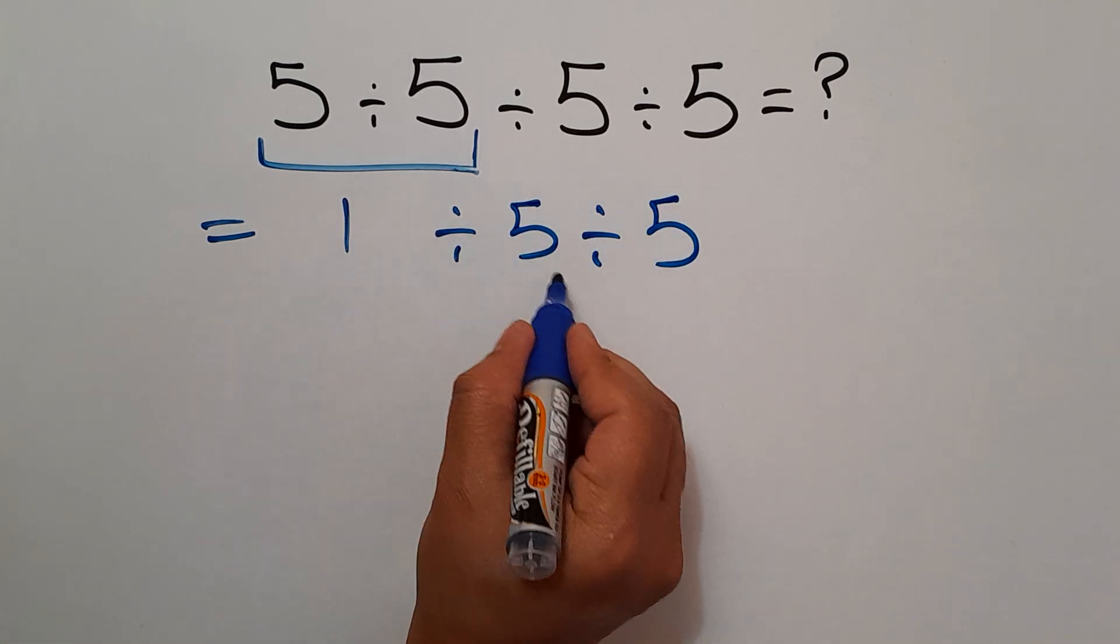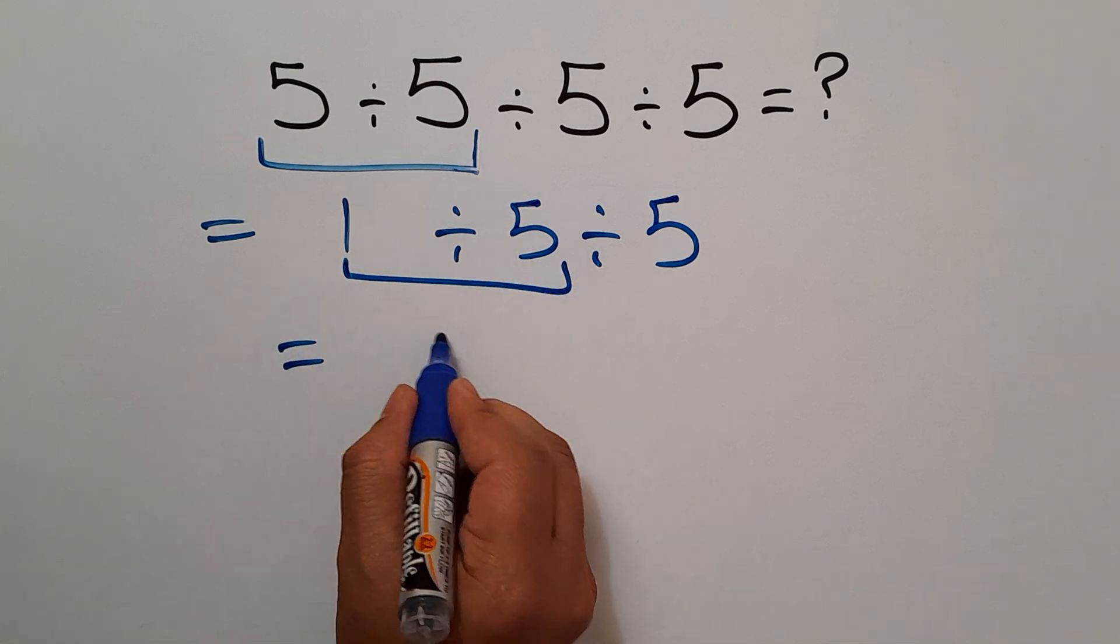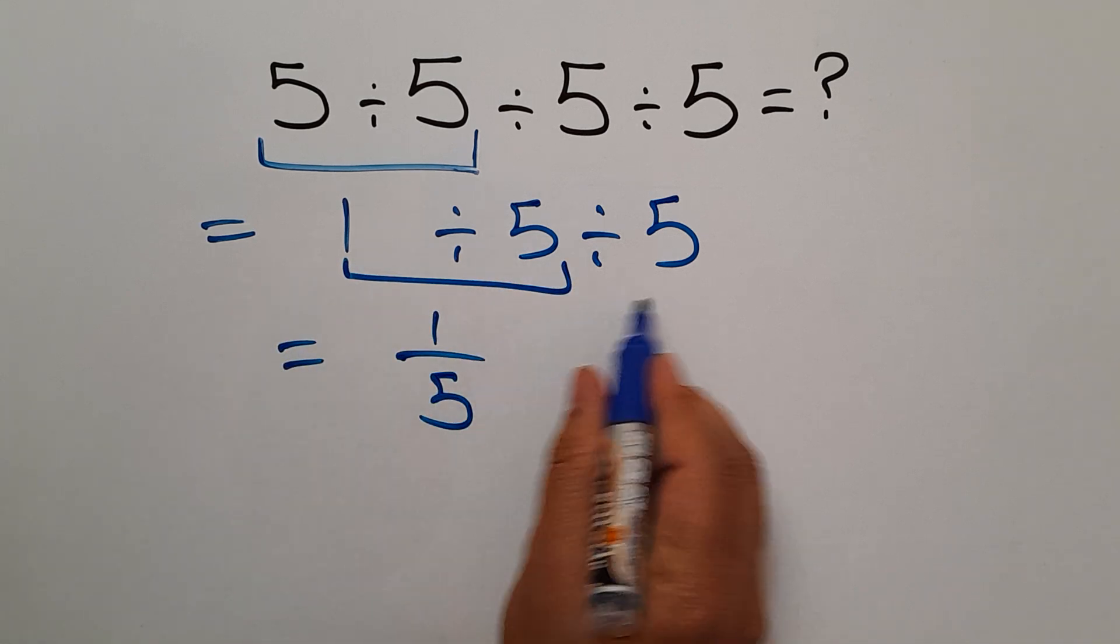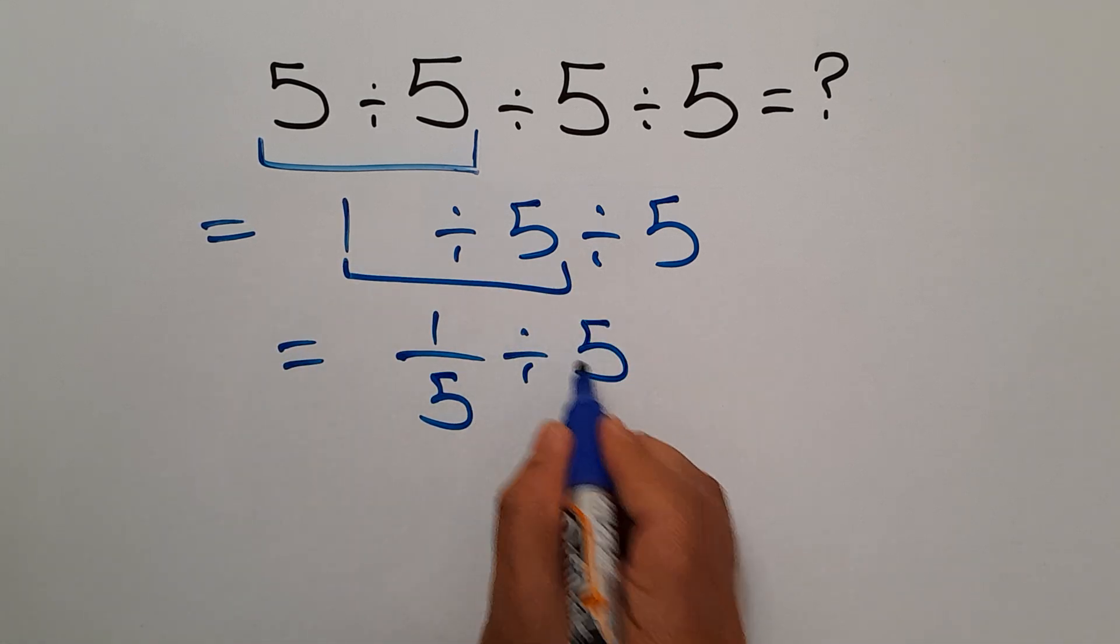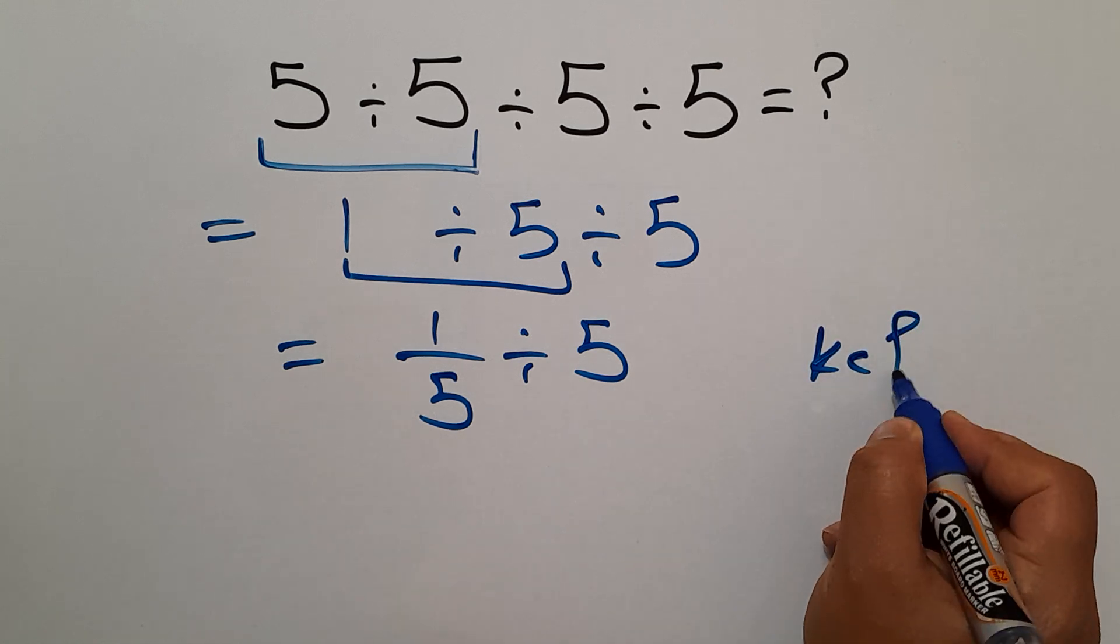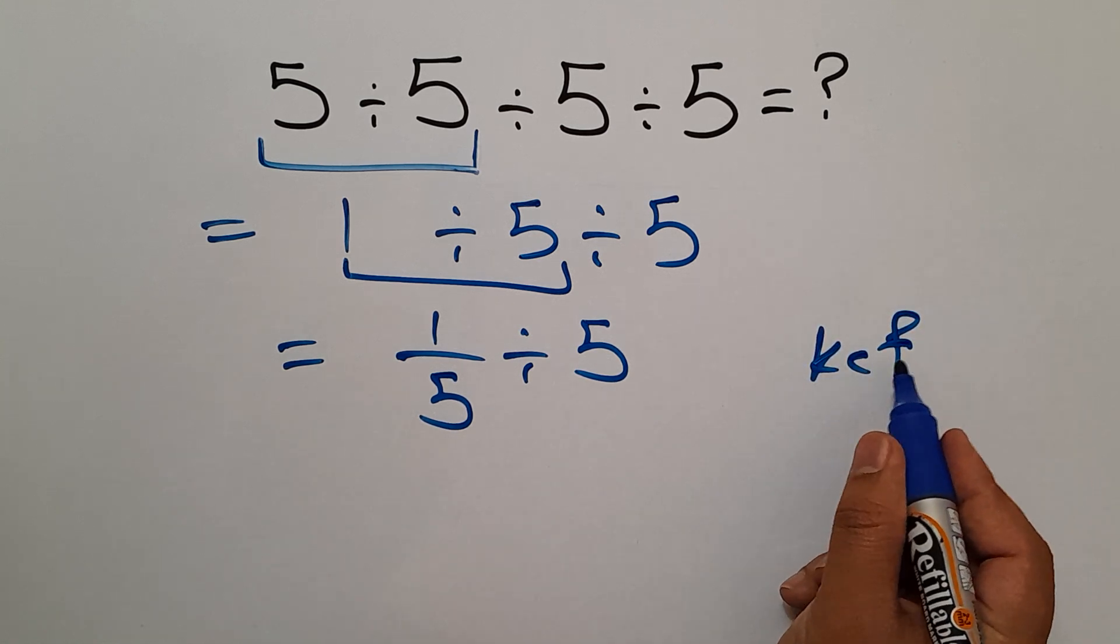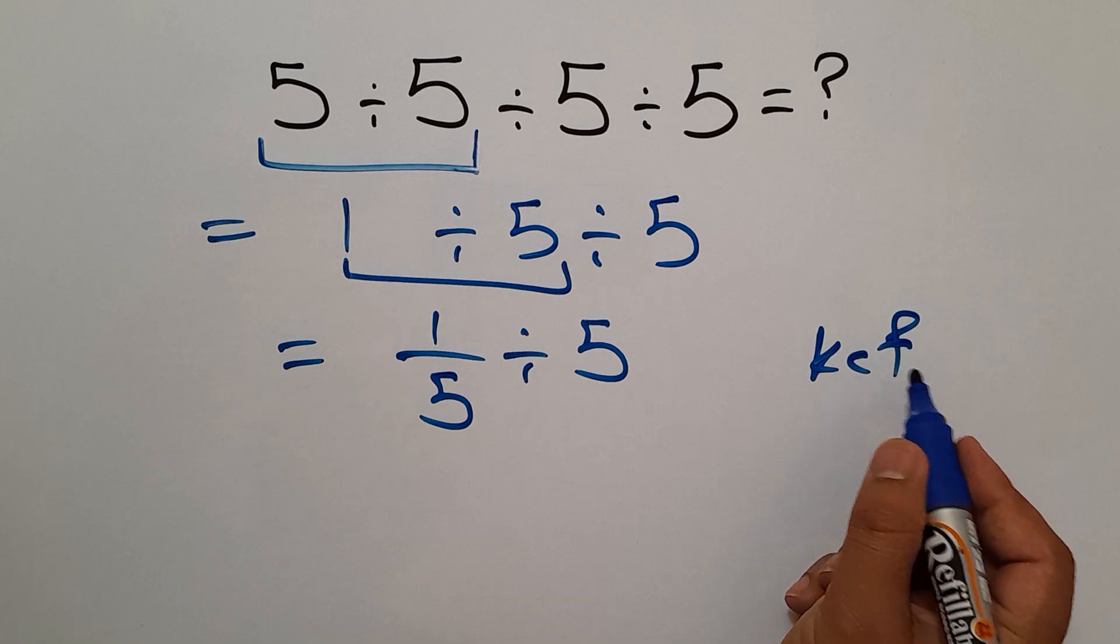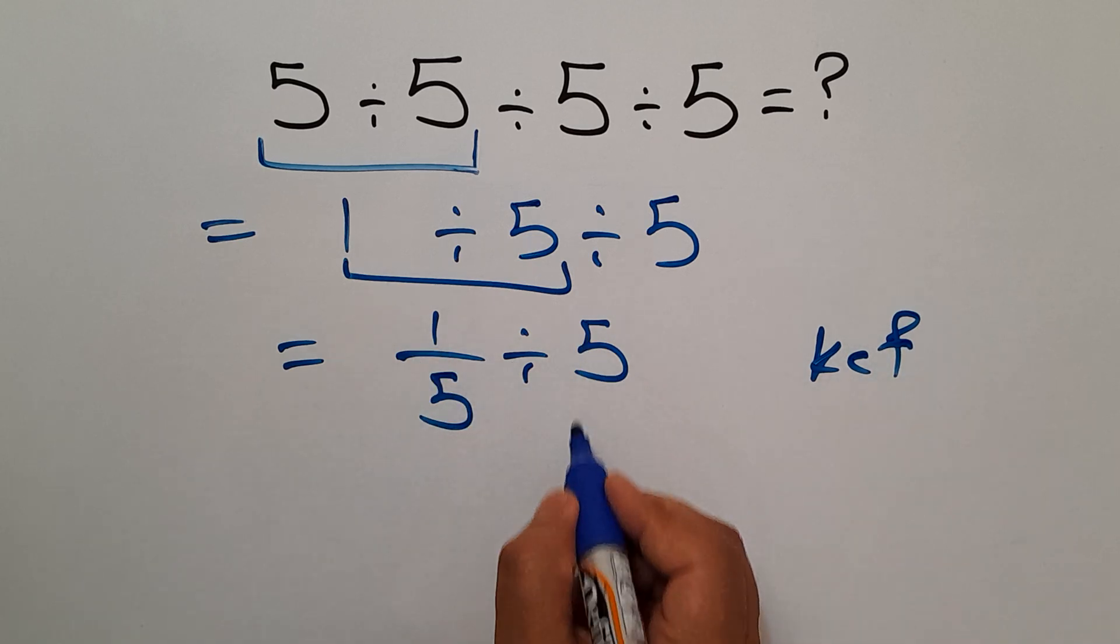1 divided by 5 can be written as 1 over 5, then divided by 5. Now, according to the KCF rule, K stands for keep, C stands for change, and F stands for flip.